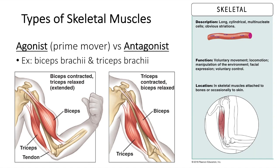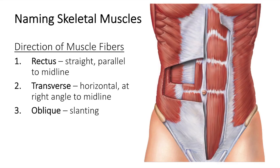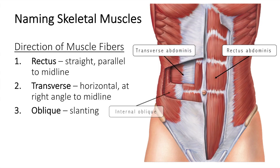Remembering the names of skeletal muscles can be difficult, but certain clues help. Muscles are named on the basis of the following criteria. Some muscles are named for the direction in which their muscle fibers run with reference to the midline of the body. A muscle with fibers running parallel to the midline will have the term rectus, meaning straight, in its name — for example, the rectus abdominis is the straight muscle of the abdomen. The terms transverse and oblique indicate that the muscle fibers run at right angles and obliquely to the midline — the transverse abdominis and internal and external obliques are examples of this.